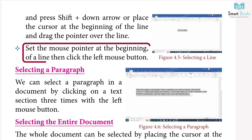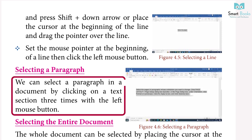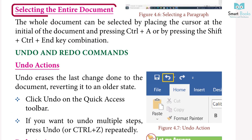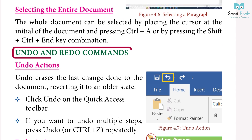You can also set the mouse pointer at the beginning of a line and click the left mouse button to select it. Selecting a Paragraph: we can select a paragraph by clicking on the text section three times with the left mouse button. Selecting the Entire Document: select all by placing the cursor at the start and pressing Ctrl+A, or pressing Shift+Ctrl+End.